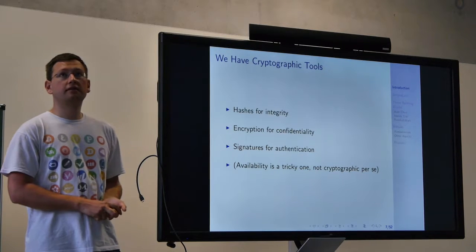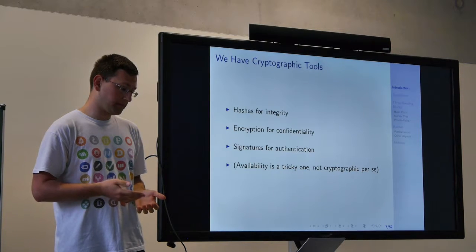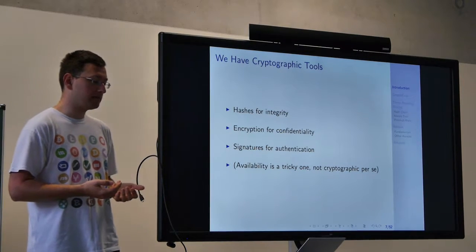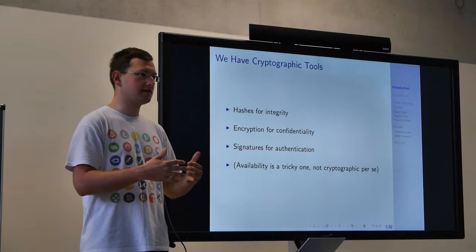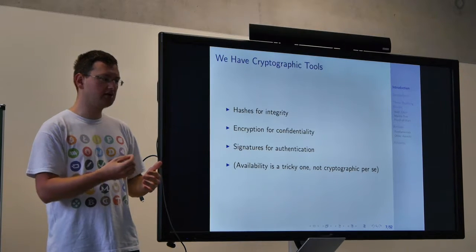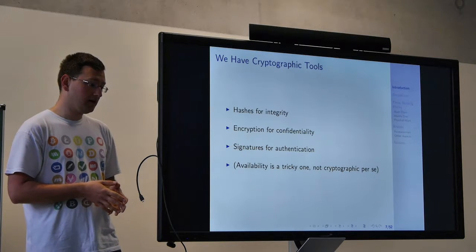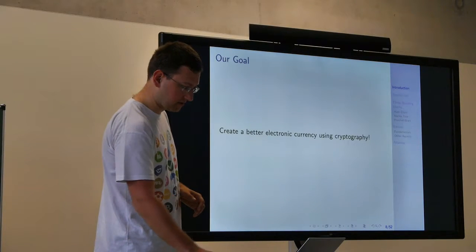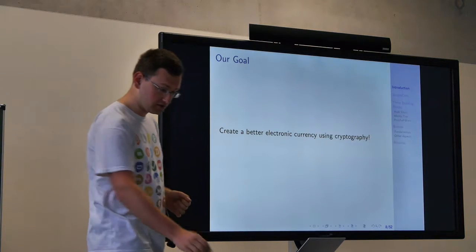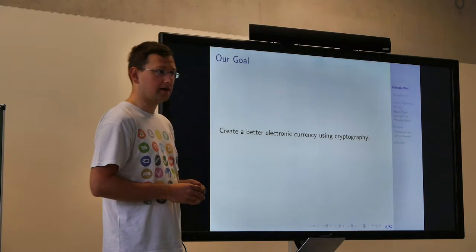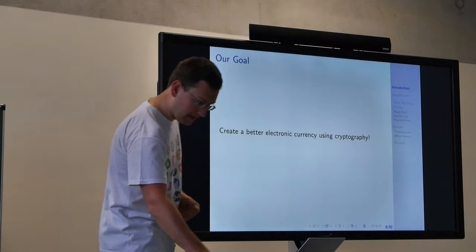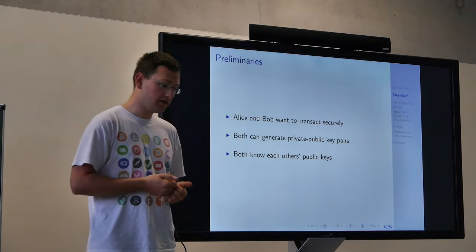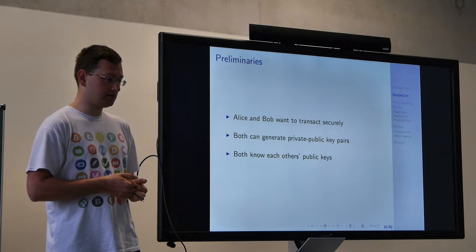Availability is important, but it's not easy to ensure using cryptographic techniques, because when we talk about availability we want to prevent something from blocking me from doing a transaction — meaning somebody prevents me from issuing a network packet. This is not a cryptographic task per se, but still an important area of security. So we're trying to create a better electronic currency using cryptographic means. As usual in cryptography, we have Alice and Bob, who want to transact securely, and we assume they can both generate private-public key pairs.